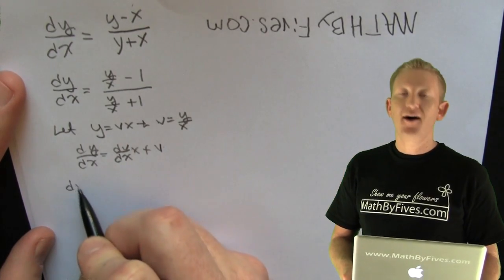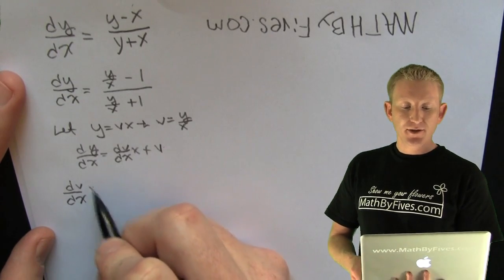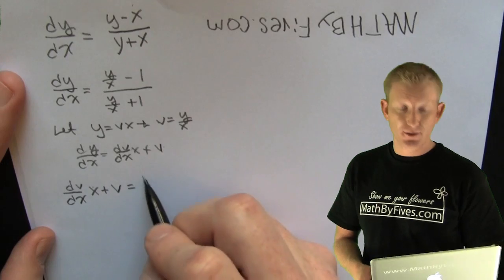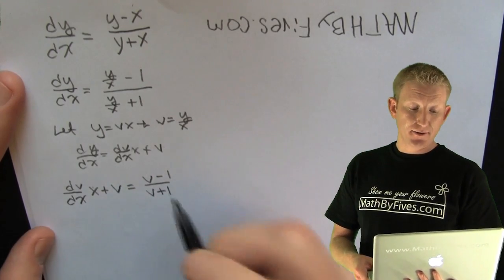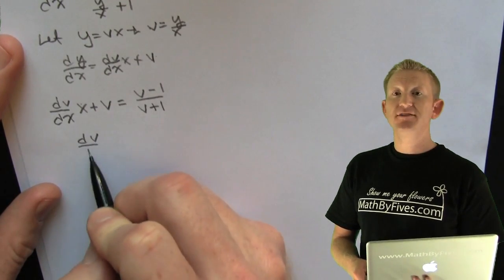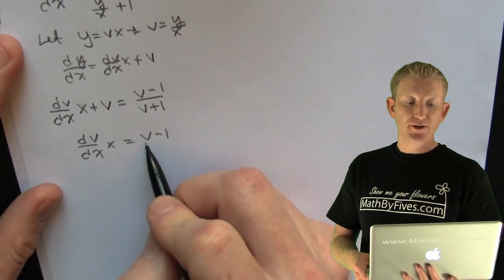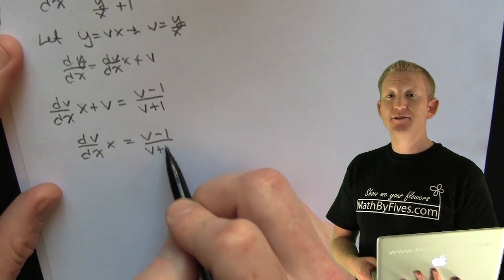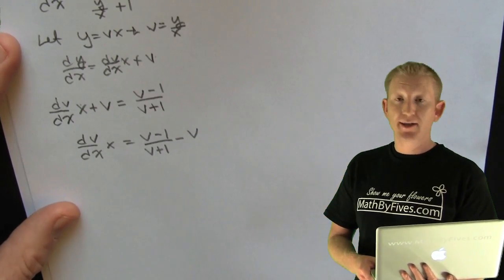Why is he doing that? It's because he wants to make the usual substitution. So on the right side, when he differentiates both sides, he uses the product rule. And then he takes that dy/dx and substitutes it in for dy/dx. Now he's getting all of his v's on one side. Why? Because he's going to attempt to separate them. I think he uses this video in another one of his differential equations videos too, or at least the solution.